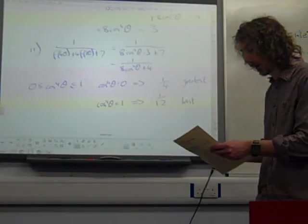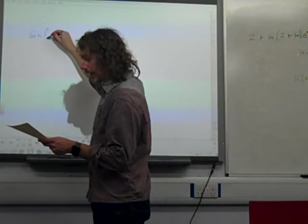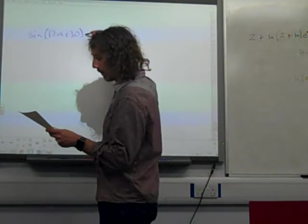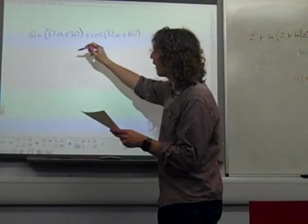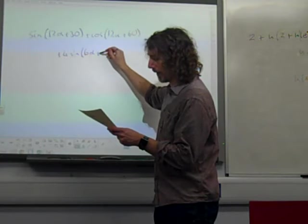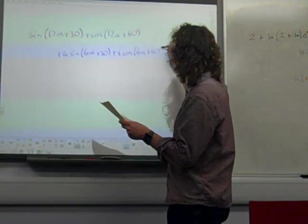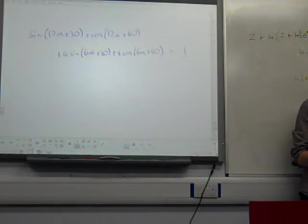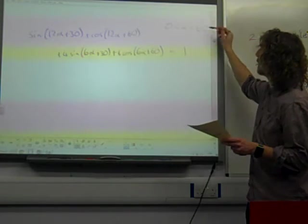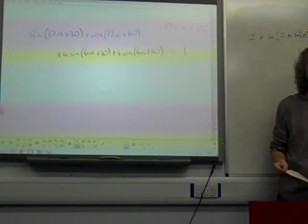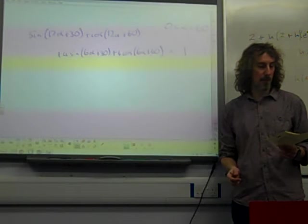So we go to the very final four marks, which was a real match. The last four marks set, solve sin 12 alpha plus 30 plus cos 12 alpha plus 60 plus 4 sin 6 alpha plus 30 plus 4 cos 6 alpha plus 60 equals what? 4 alpha between 0 and 60, so that's quite an important constraint.